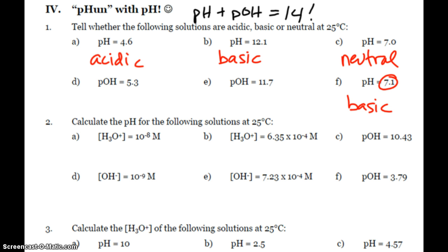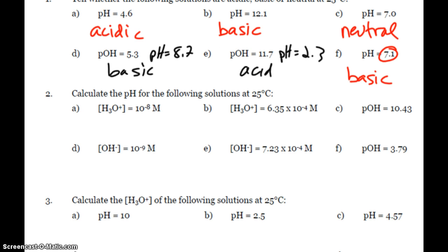So if I'm given my pOH, then it's just a matter of subtracting from 14 to find that. So my pH is 8.7. Basic. And here, my pH is 2.3 acidic. To find pH, you simply take the negative log of the hydronium concentration. And so, somehow you've got to find the hydronium concentration. Or if you're given pOH, again, subtract from 14.